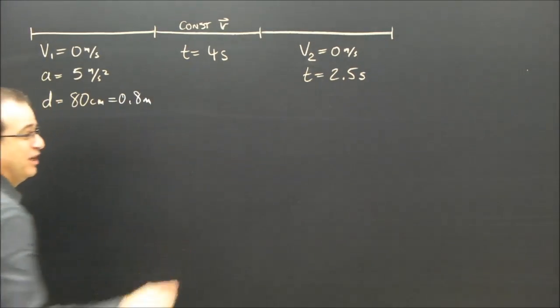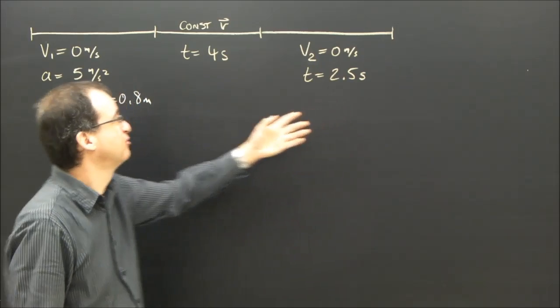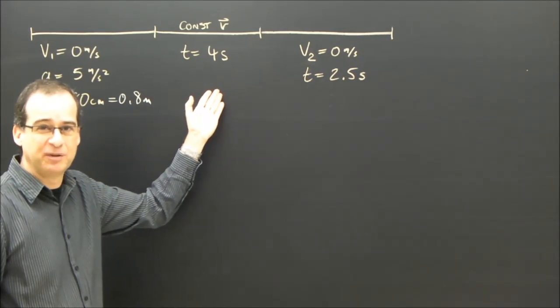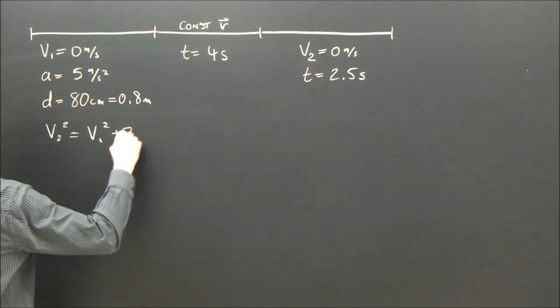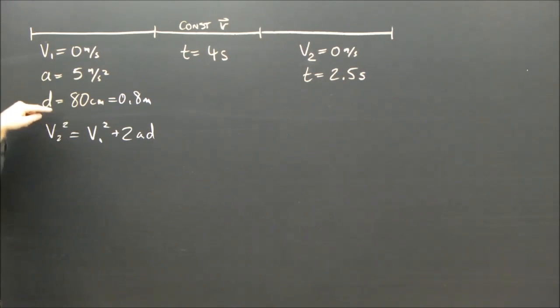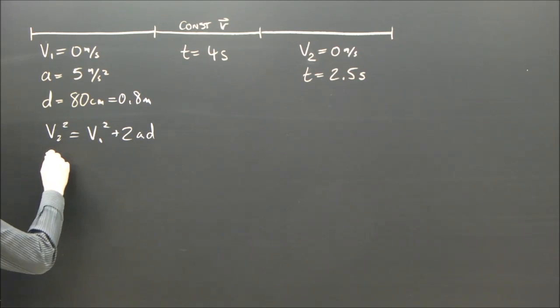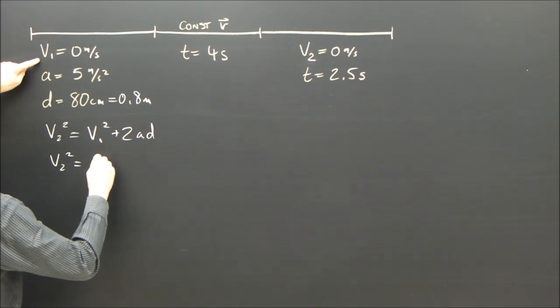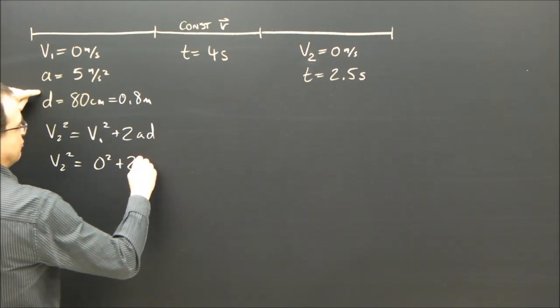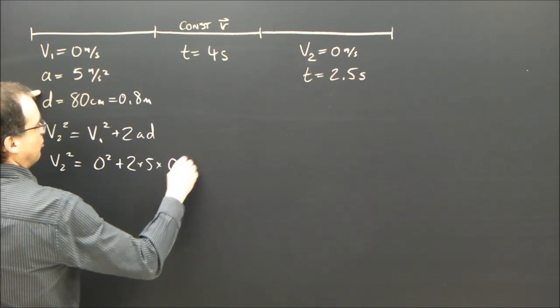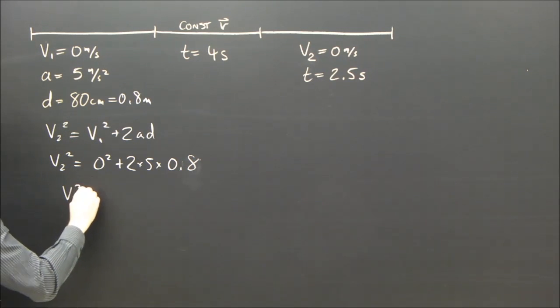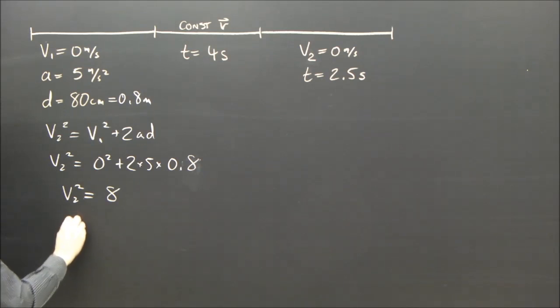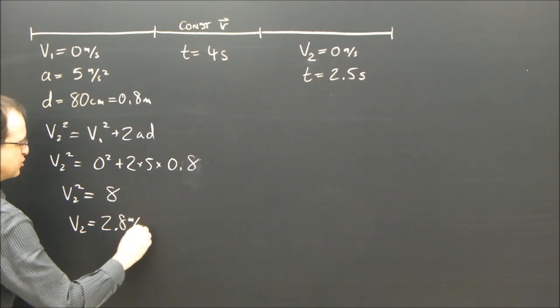So let's find v₂, because I know I'm going to need it, because I can't find the displacement here without a third variable. So I'm going to use v₂² = v₁² + 2ad. I use that because it's got the variable I want. So v₂² = 0² + 2 × 5 × 0.8. So v₂² = 8. So v₂ is the square root of 8, which is 2.8 m/s.